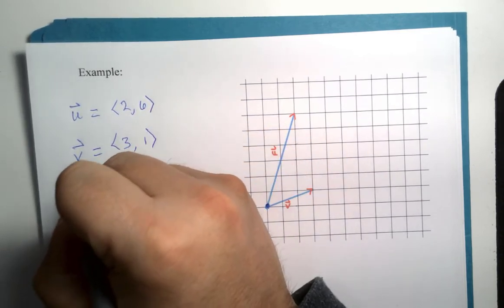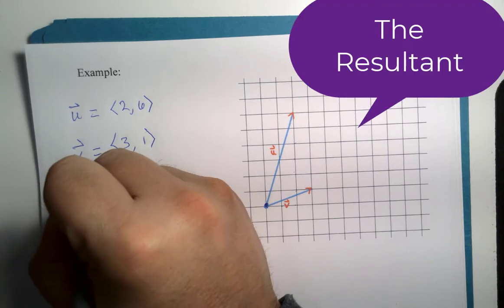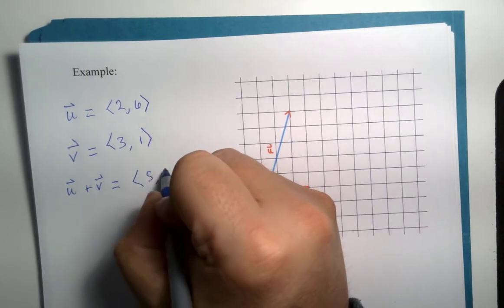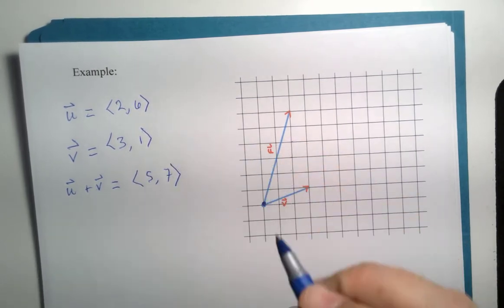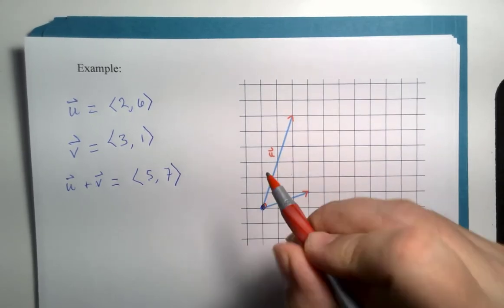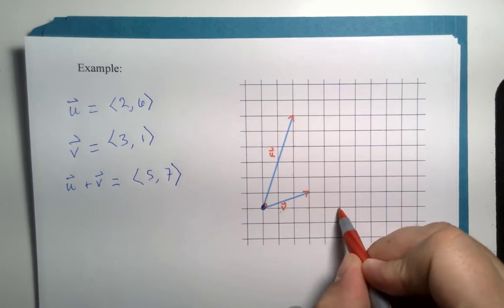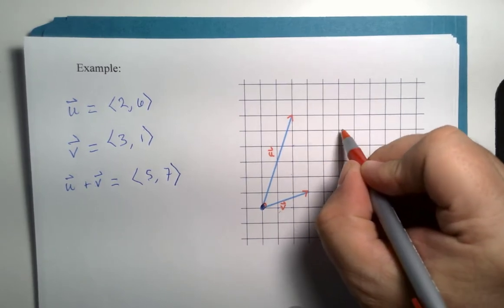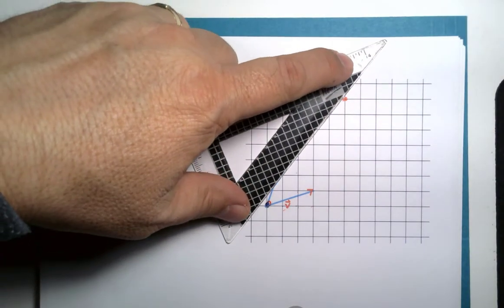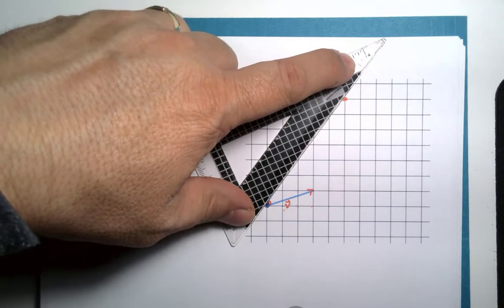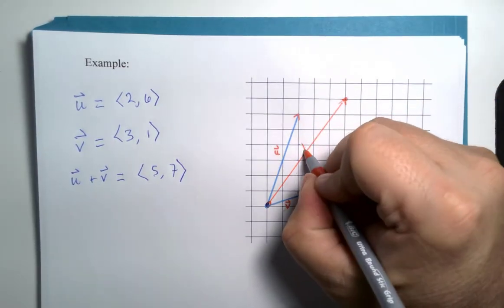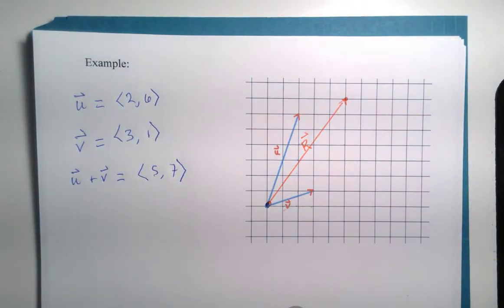If I want to find what's called the resultant U plus V, that would be the vector five comma seven. Now, let me draw this resultant from the same starting point. One, two, three, four, five, one, two, three, four, five, six, seven. I'll get myself all turned around here. I'm just going to put R, capital R for resultant, put a vector symbol on it.